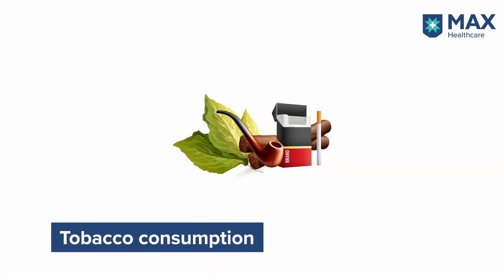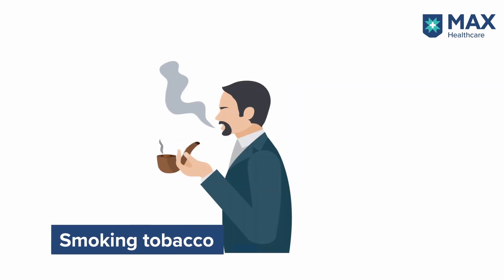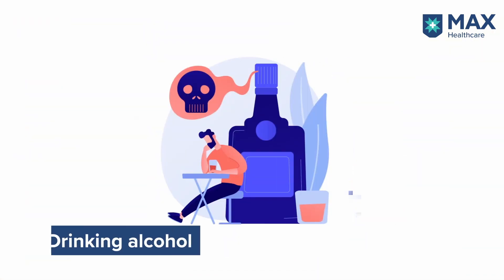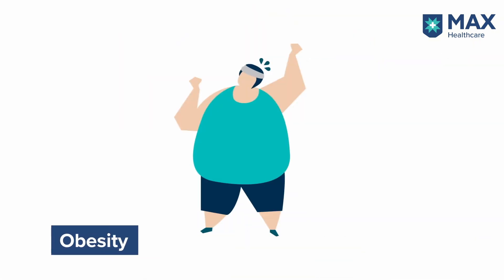It has been found that people who consume tobacco — this can be in the form of smoking or eating betel leaf — are at greater risk of developing esophageal cancer. Even if someone consumes excessive alcohol, they stand a risk of getting esophageal cancer. If the person is obese or has a problem with obesity, they are at a greater risk of having esophageal cancer.